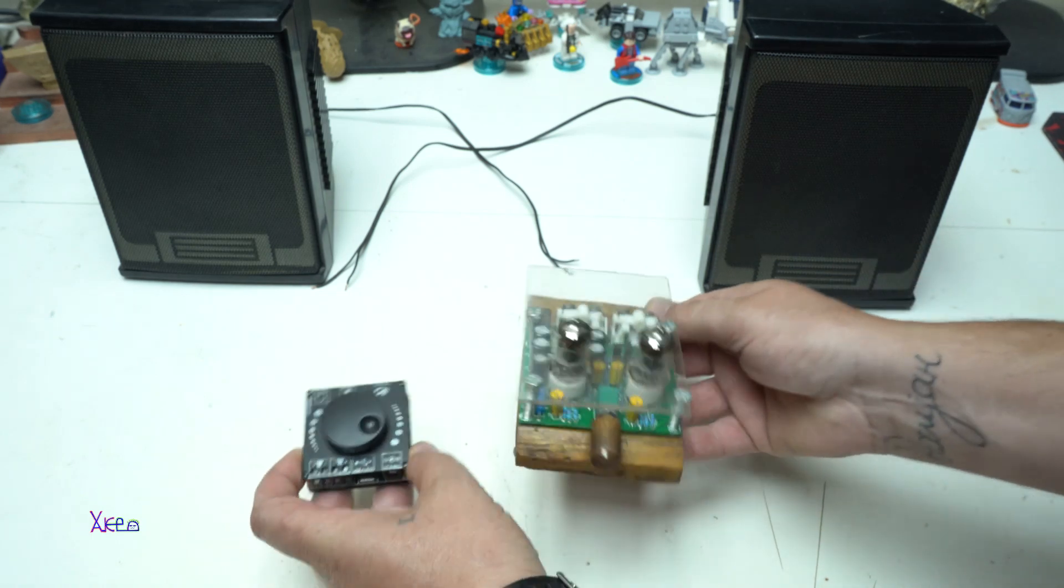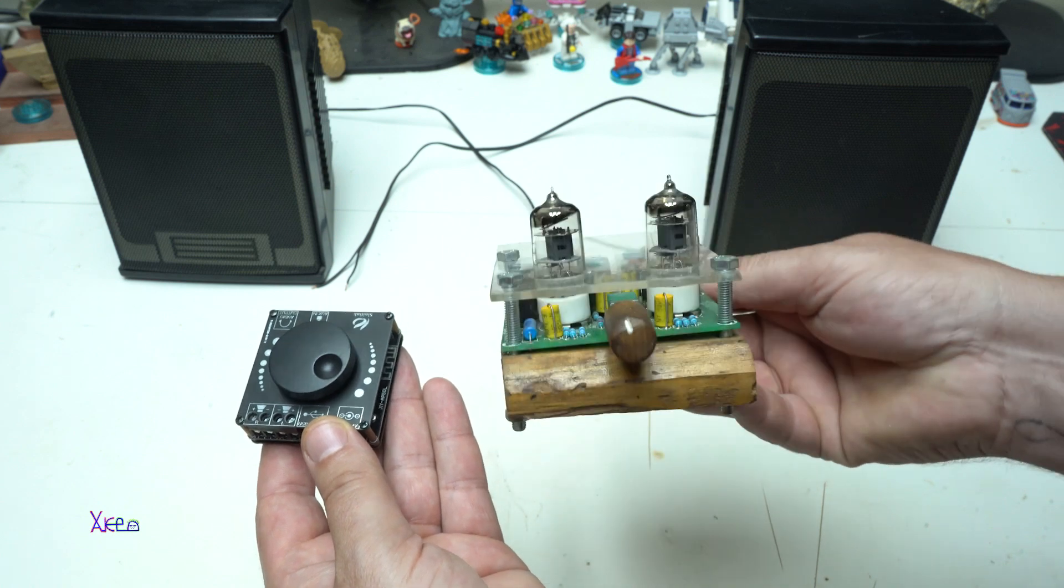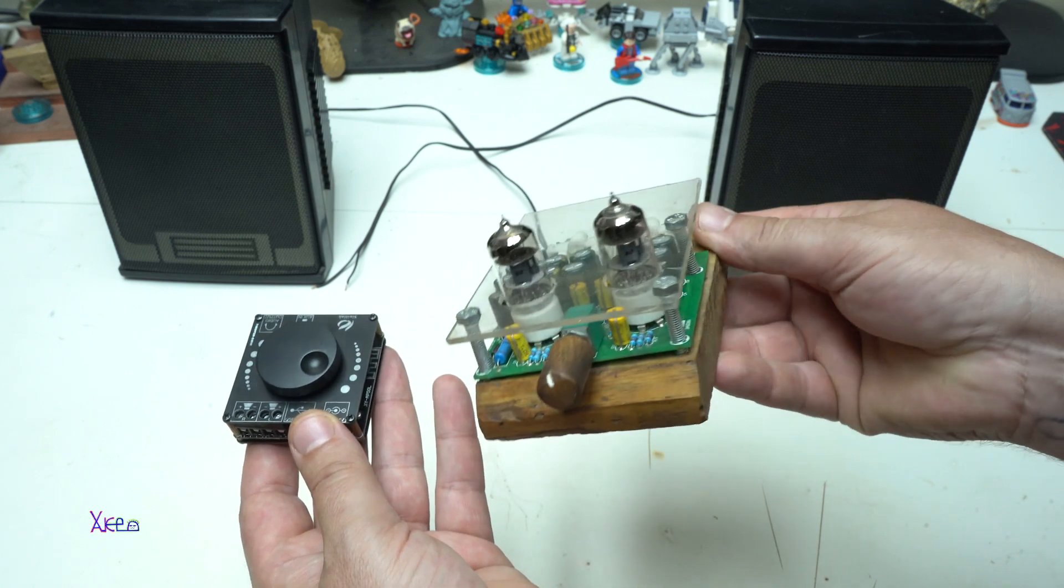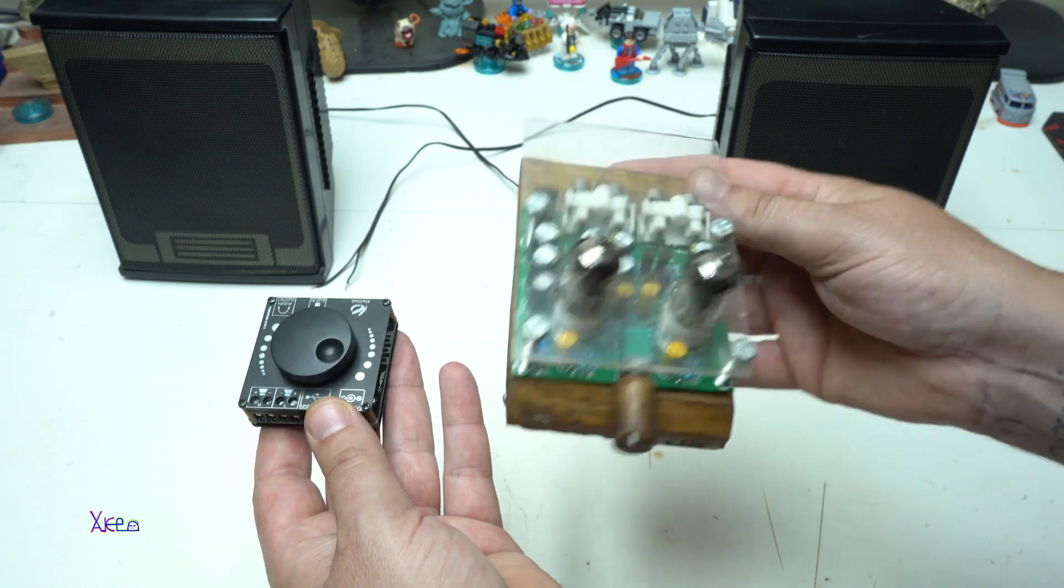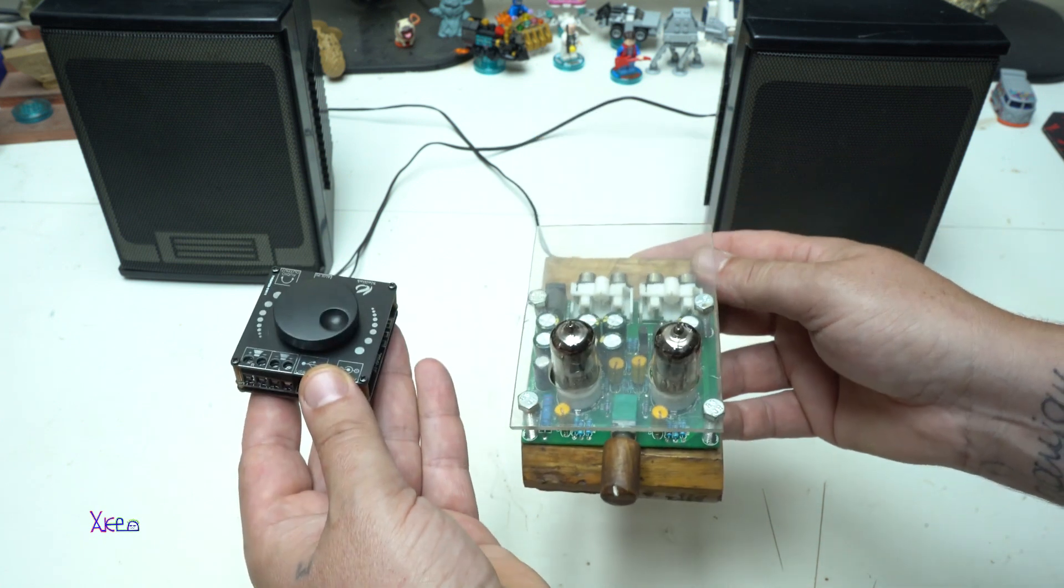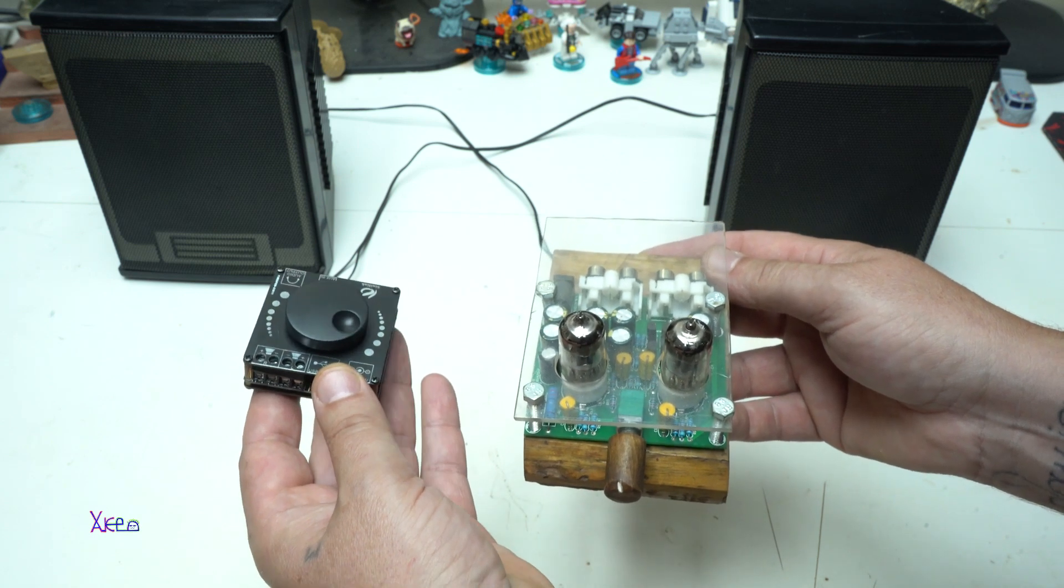Today's video is all about these two amplifiers. This one is a class A tube preamplifier. It's a kit from AliExpress, and the second one is an amplifier, two times by 50 watts, also from AliExpress.